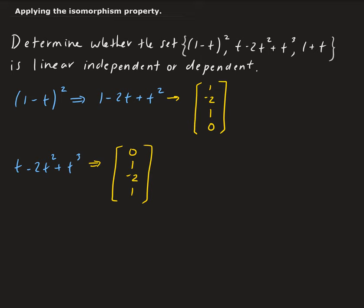And then for the last one, we have 1+t. So 1+t is going to get mapped into, we have 1, 1 for t, and then 0 for t², and 0 for t³.